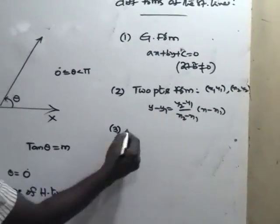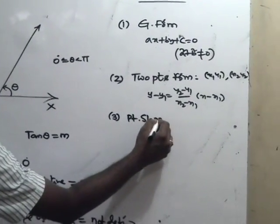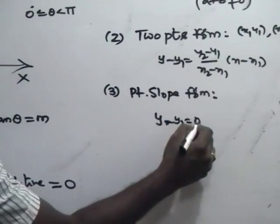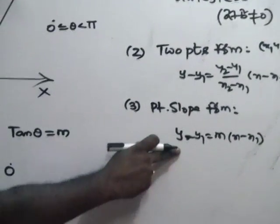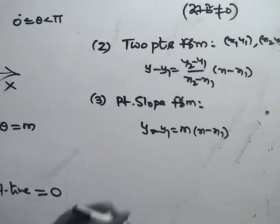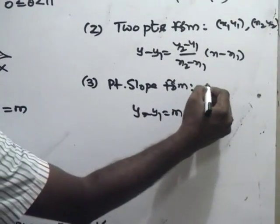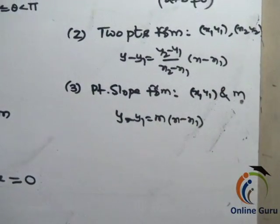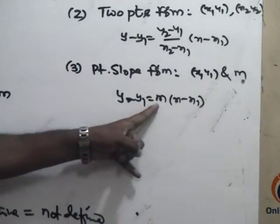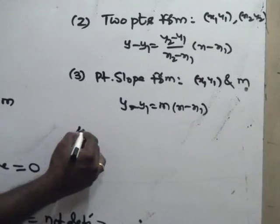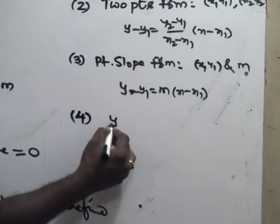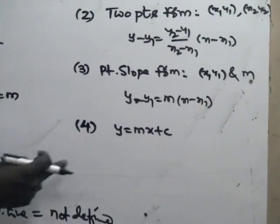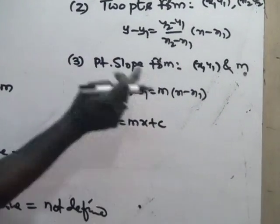The third form is the point-slope form. The equation of a straight line passing through point (x1, y1) with slope m is: y - y1 = m(x - x1). The fourth form is the slope-intercept form: y = mx + c, where m is the slope and c is the y-intercept. Alternatively, y = m(x - a) where a is the x-intercept.